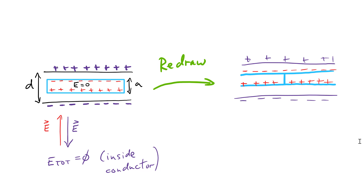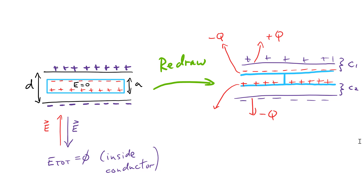All we have here now are two capacitors — C1 over here and C2 over here, connected by a wire. The charge on each of these plates has to be the same: plus Q on the top plate, minus Q, and the inner surface of the slab is minus Q, while the bottom surface of the slab is plus Q. So C1 and C2 are simply two parallel plate capacitors in series with each other. When you insert a metal plate, the problem simply boils down to two capacitors in series.